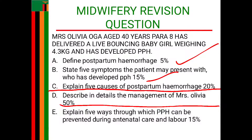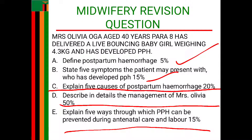Moving to Question E, which asks for five ways PPH can be prevented during antenatal care and labor. During antenatal care, you can prevent PPH by providing skilled antenatal care services to identify any predisposing factors or causes such as multiple pregnancies, polyhydramnios, and grand multiparity, so that necessary interventions such as caesarean section and active management of the third stage of labor can be carried out. Another way is active management of the third stage of labor by giving oxytocin to promote uterine contractions, aiding in arresting any hemorrhage.